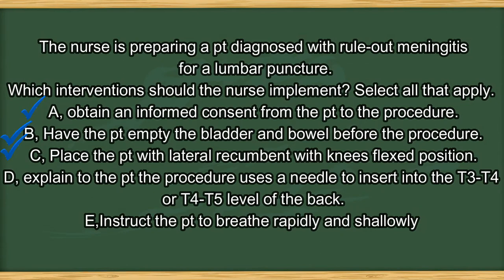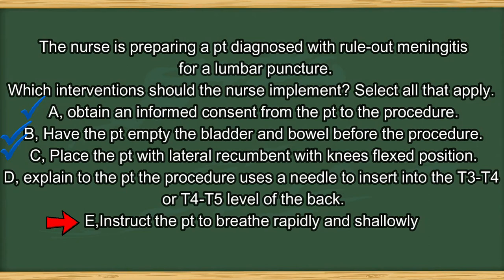The answers are A, B, and C. Option A: Lumbar puncture is an invasive procedure, so informed consent is required. Option B is right — empty bladder and bowel before the procedure so the patient is comfortable during it. Option C is also correct. D is wrong because the lumbar puncture needle inserts into L3 to L4 or L4 to L5 — T3 to T5 are the thoracic spine area. Option E is also wrong; the patient should be encouraged to breathe normally during this procedure.